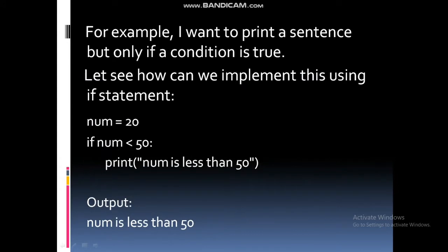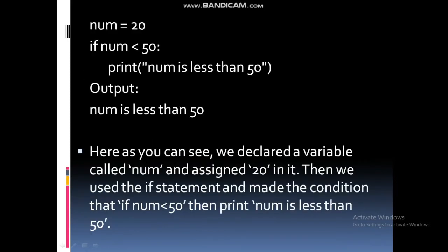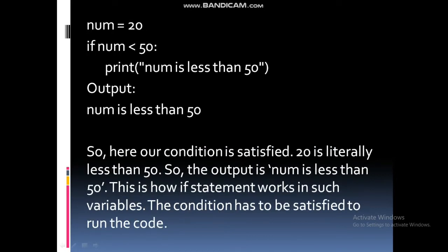For example, I want to print a sentence but only if a condition is true. Let's see how I can implement this using if statement. Here, we declared a variable called num and assigned 20 as int. Then we used if statement and made the condition that if num is less than 50, then print 'num is less than 50'. Our condition is satisfied — 20 is literally less than 50 — so the output is 'num is less than 50'. This is how if statement works; the condition has to be satisfied to run the code.